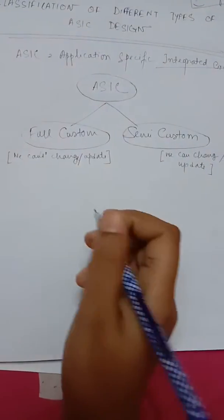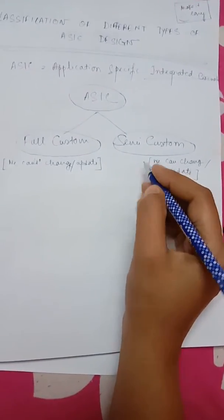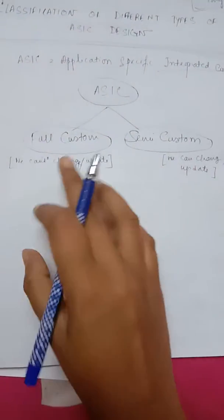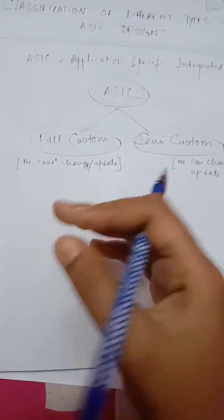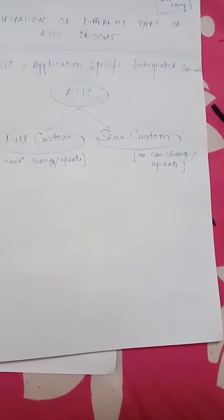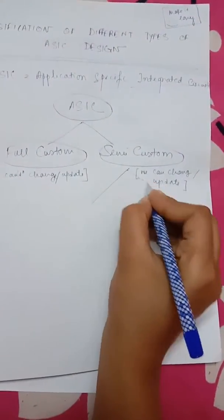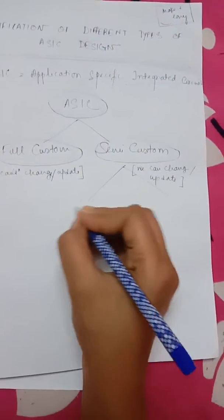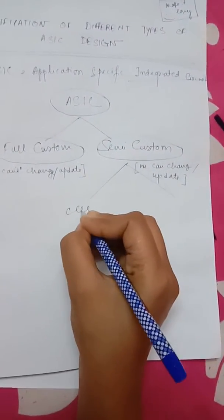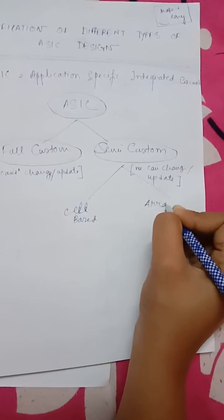Now, coming to the parts of Semi-Custom. Full Custom is not having further division. Moving to the Semi-Custom design, this Semi-Custom design is divided into two parts: Cell-Based and Array-Based.